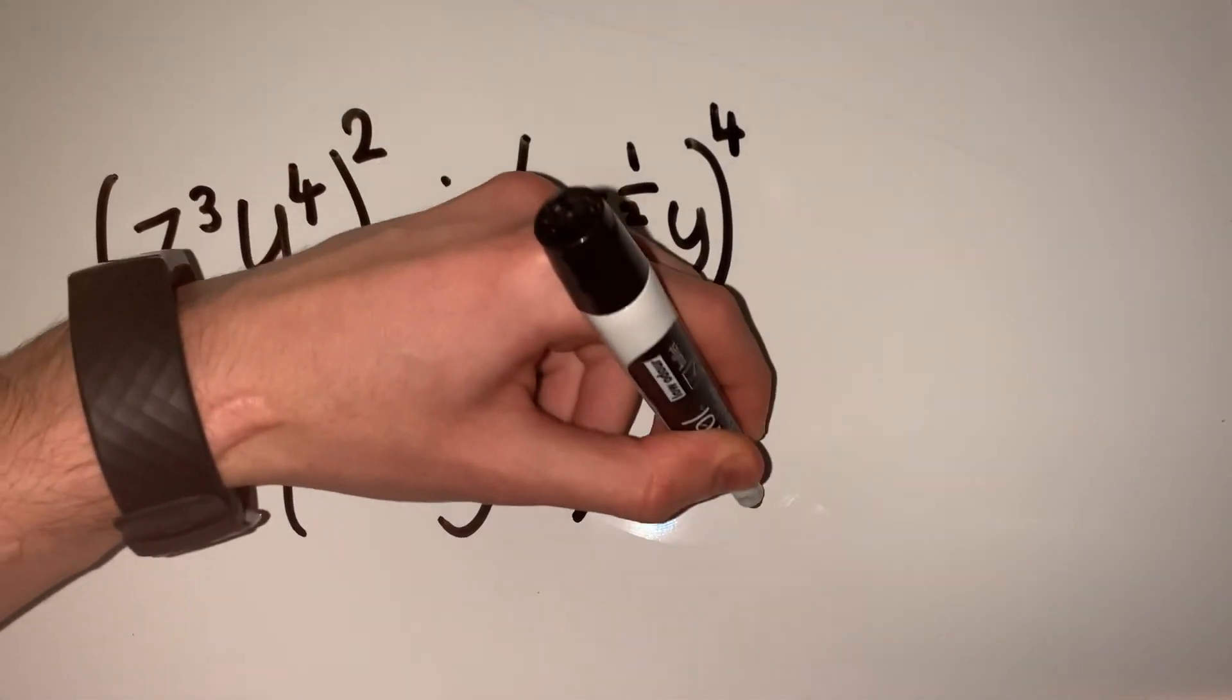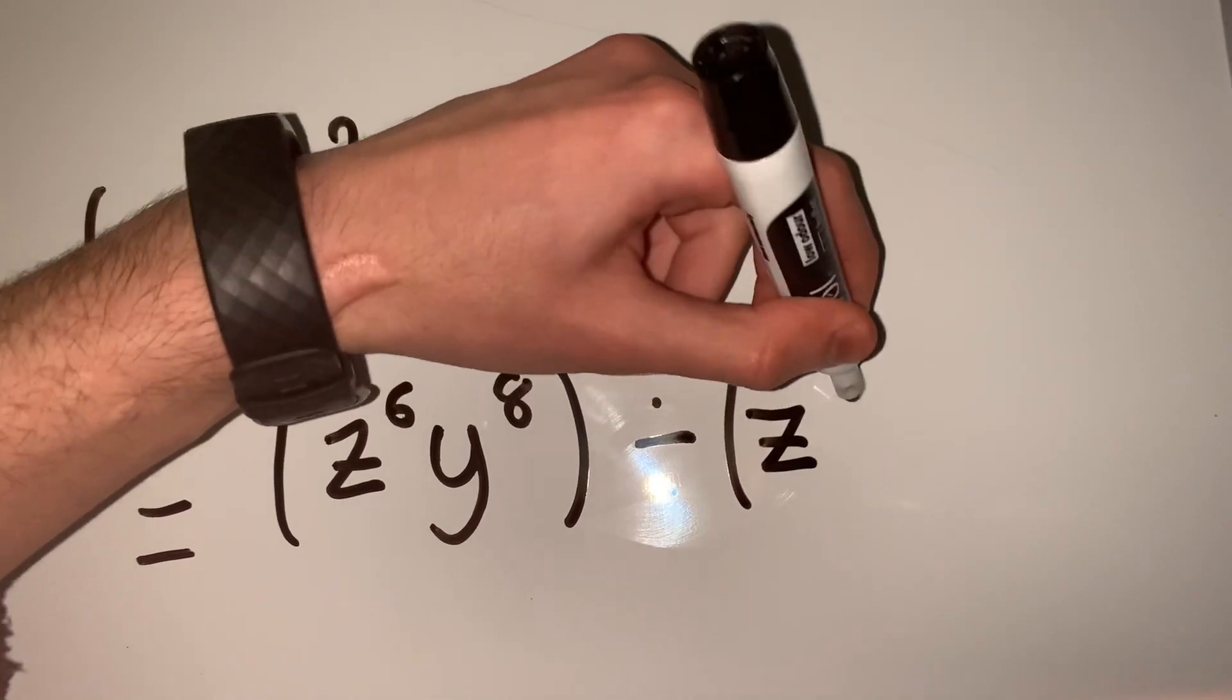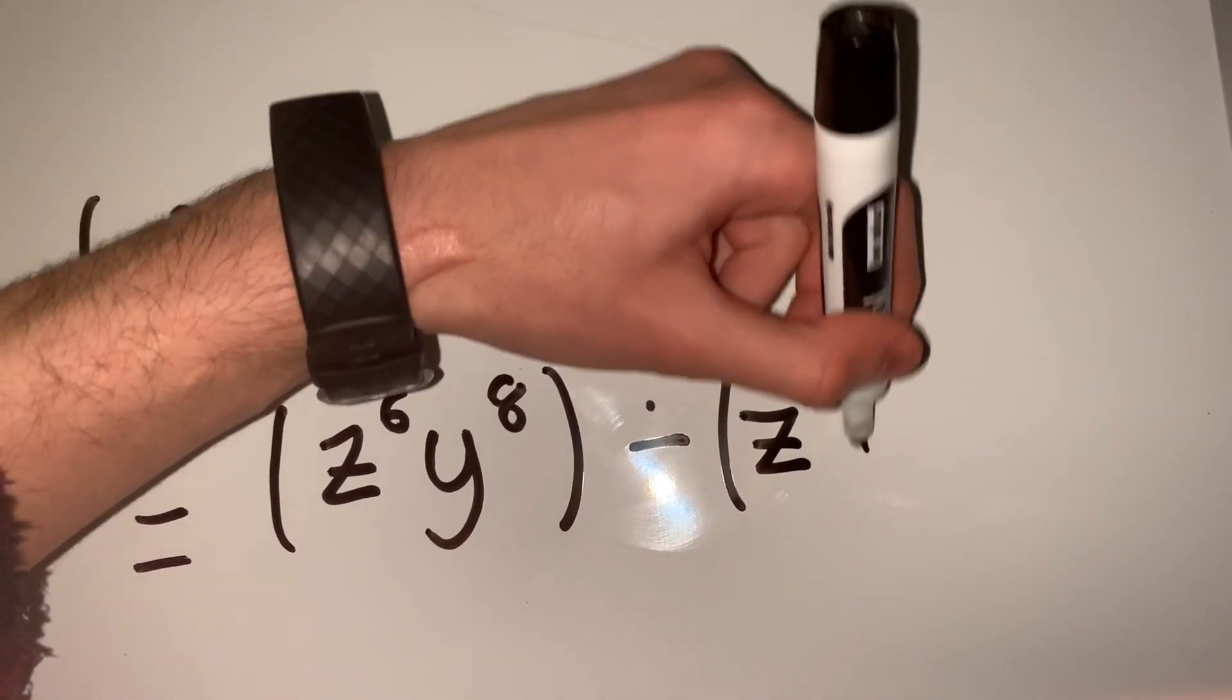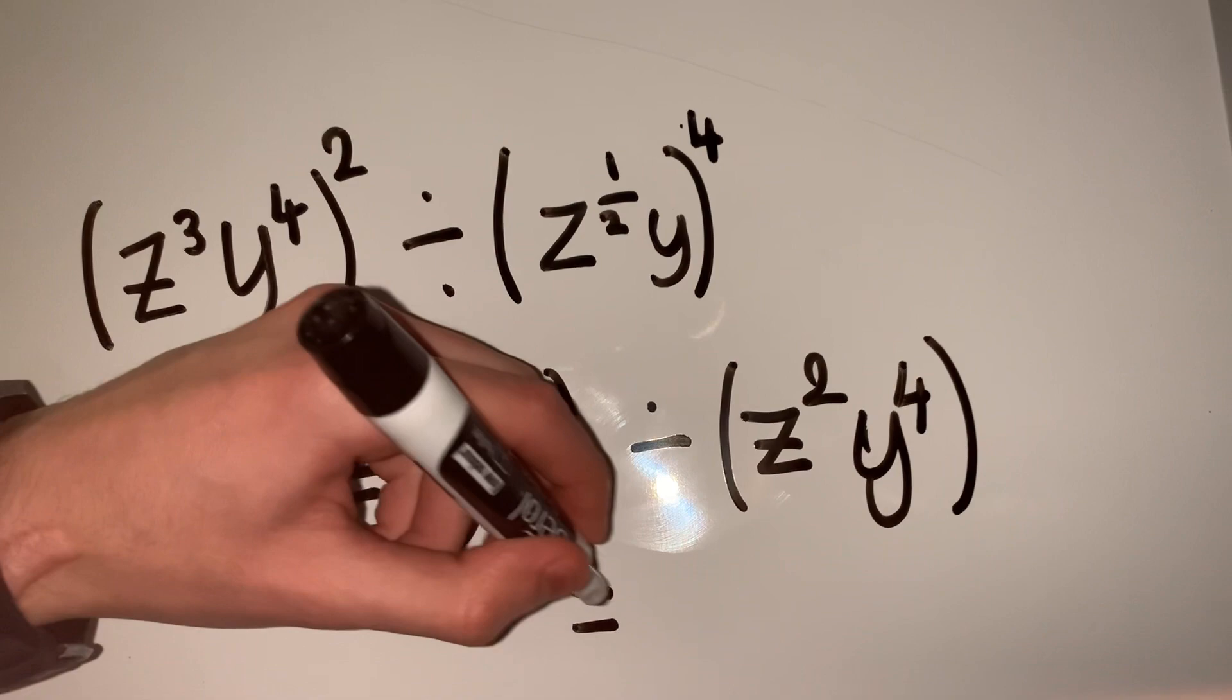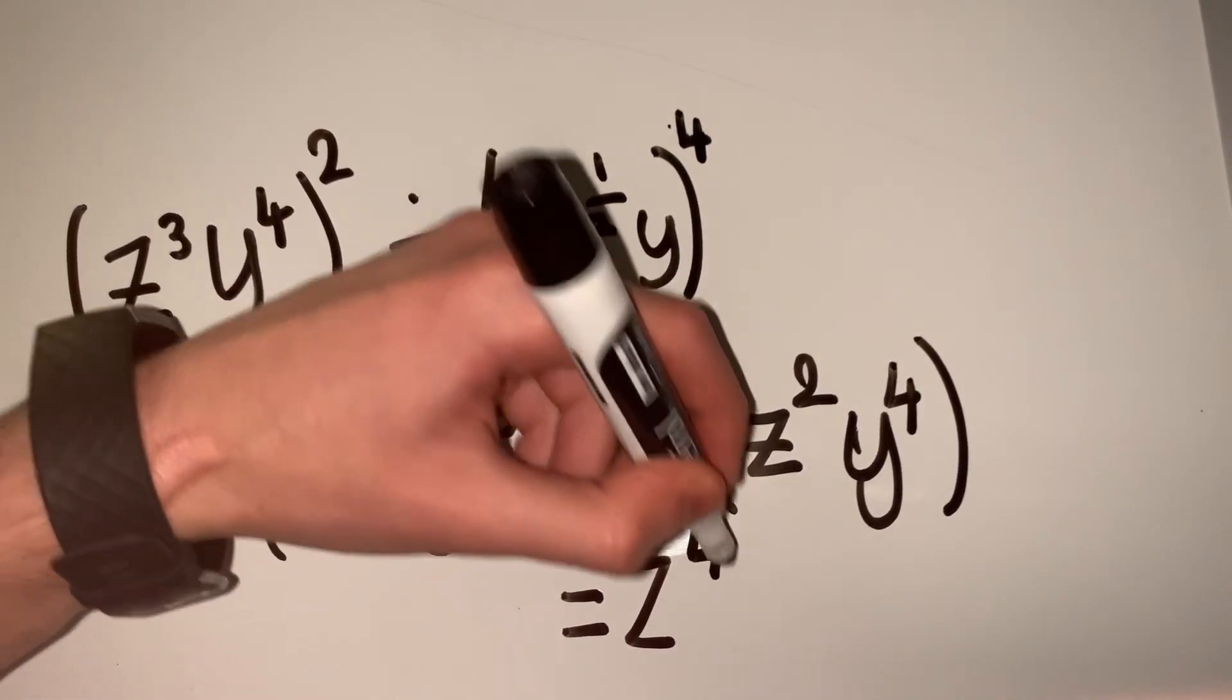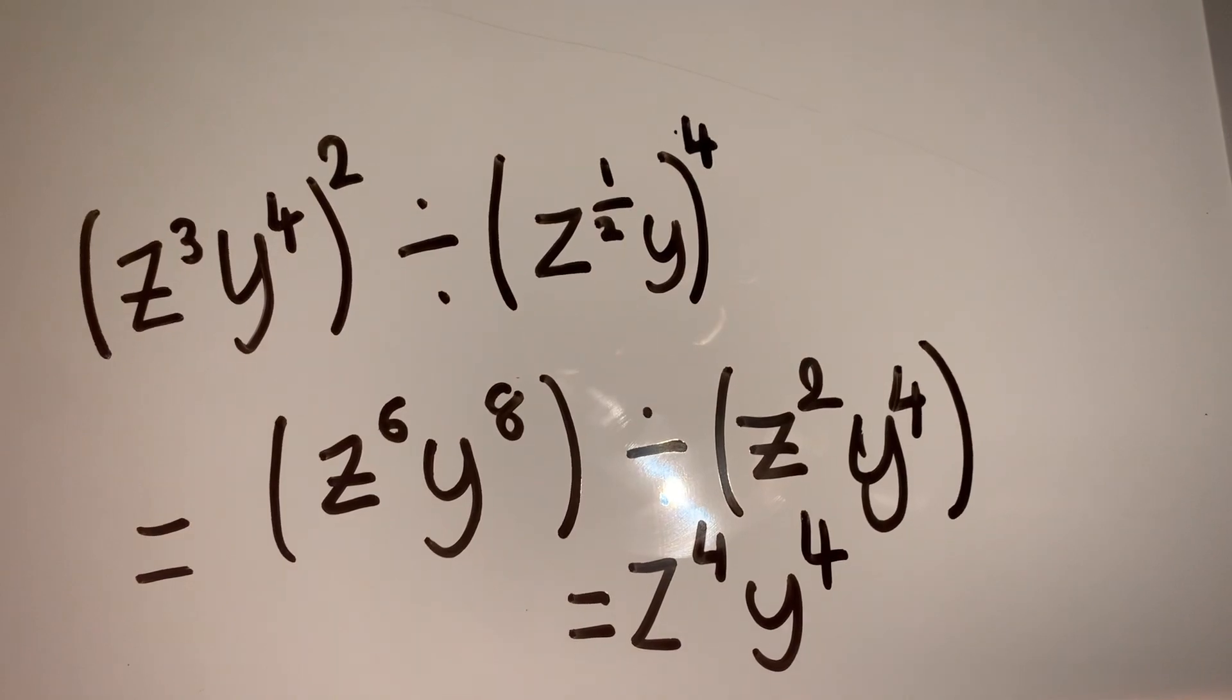We're dividing by z^(1/2) raised to the 4th power, which is (1/2)×4 equals 2, so z^2. Then we have y raised to the 4th power, so y^4. When we divide, we subtract the powers. So z^(6-2) equals z^4, multiplied by y^(8-4) equals y^4. There we have it.